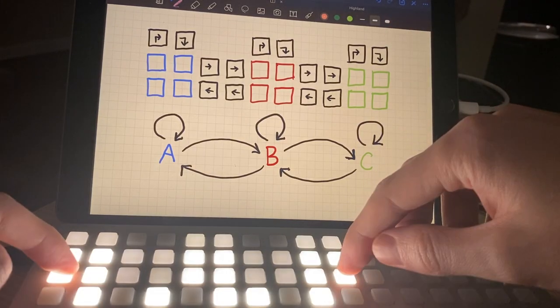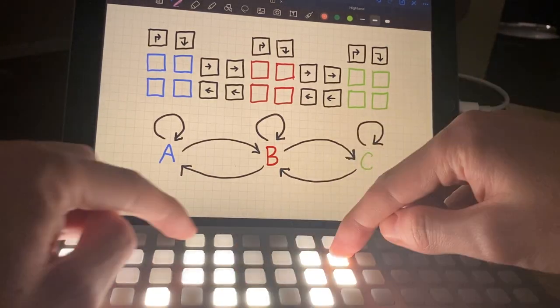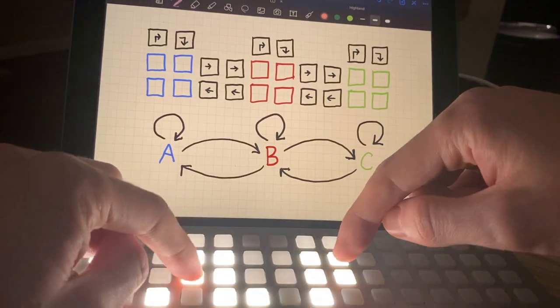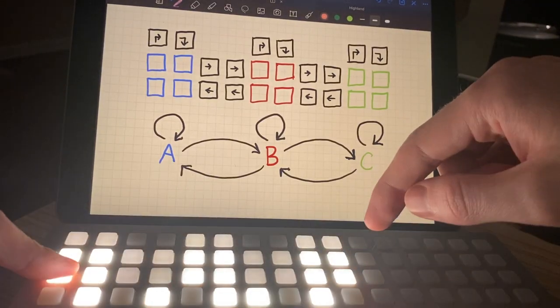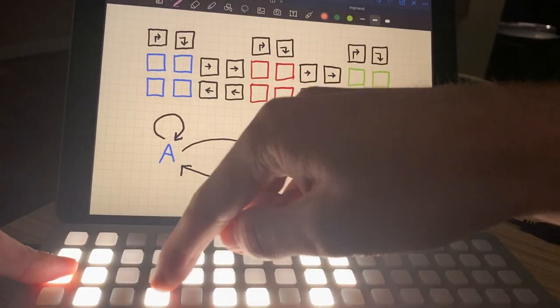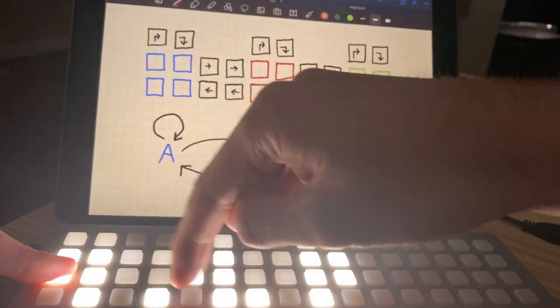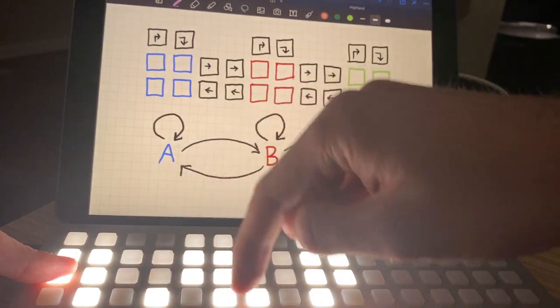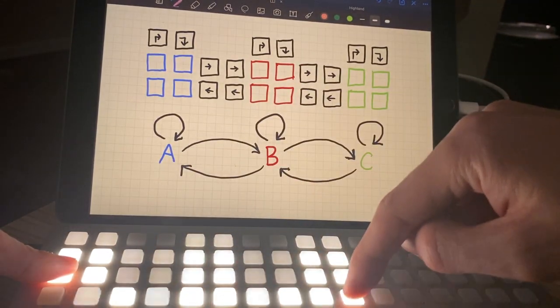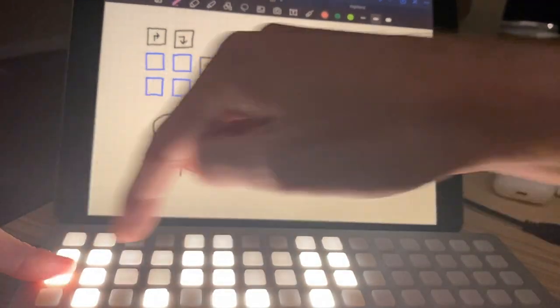Then you can set the notes with the pads. So again, all four of these buttons do the same thing for each one. Press the pad down, then use your keyboard. Black keys, off keys are black, white keys, on keys are white, and then you can pan up and down the keyboard here.